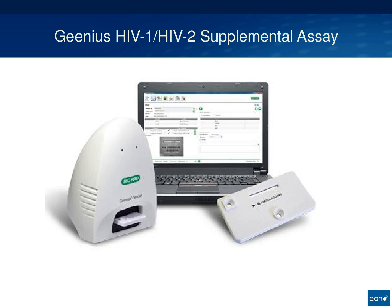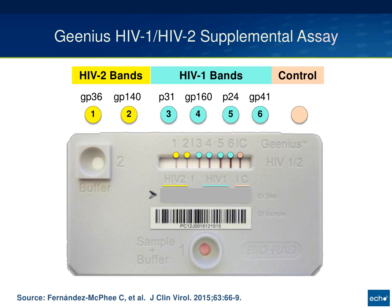The Genius is a much more complicated but much more sensitive test — it's performed in the laboratory with sophisticated algorithm testing and technology. The idea behind the Genius is that it's like a western blot on a cassette. It detects HIV-1 and HIV-2: the HIV-2 bands are the GP-36 and GP-140, while the HIV-1 bands are P-31, GP-160, P-24, and GP-41. As a combined assay it has a fairly broad ability to detect both HIV-1 and HIV-2, along with a control sample.